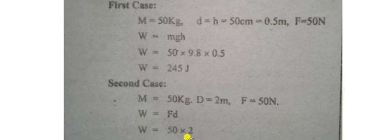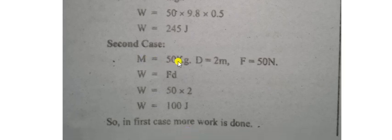In second case, mass is 50 kilogram, distance covered is 2 meters, and force is 50 newtons. Work is F·d because theta is zero, since force and displacement are parallel. So this will be 50 times 2, which equals 100 joules. So in first case more work is done.